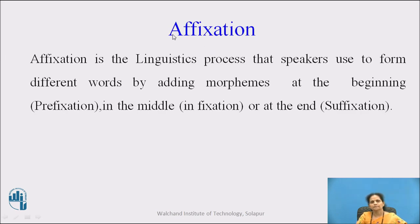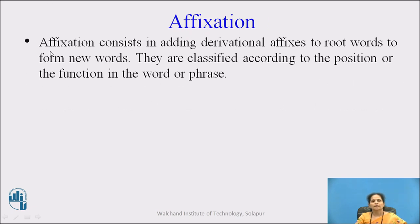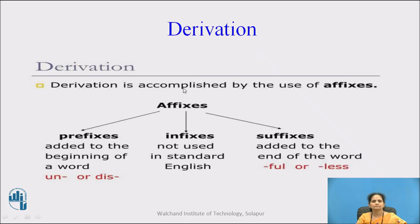So, affixation. Affixation is a linguistics process that speakers use to form different words by adding morphemes at the beginning — that is called a prefix — in the middle — that is called infixation — or at the end — that is suffixation. Affixation consists in adding derivational affixes to root words to form new words. They are classified according to the position or the function in the word or phrase. Derivation is accomplished by the use of affixation, and these are the three types of affixation.